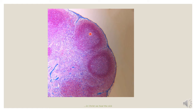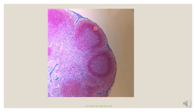Beneath this capsule is a narrow space called the subcapsular sinus. As you can see, under this blue capsule, there is a narrow whitish space, and this space is called the subcapsular sinus, into which the afferent lymphatic vessels drain. From this subcapsular sinus, channels called the cortical sinuses pass towards the medulla through the cortical cell mass.